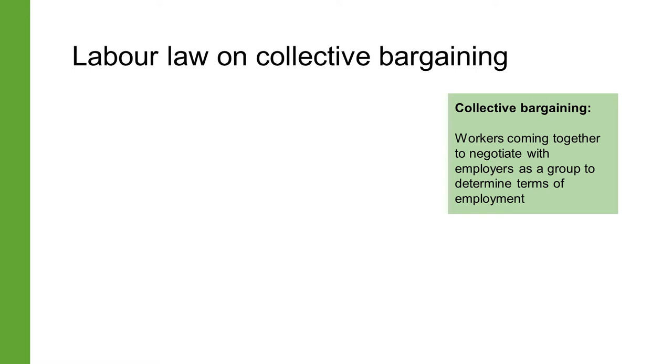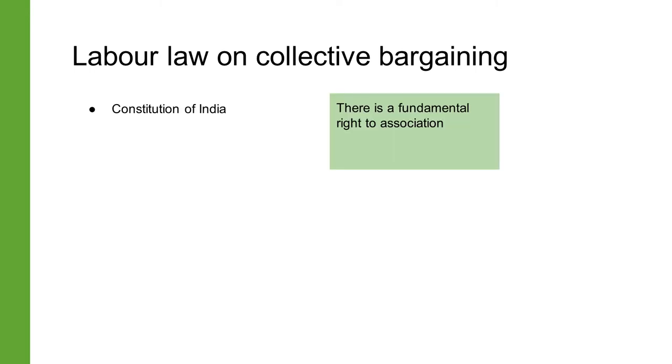Collective bargaining is the practice of workers coming together to negotiate with employers as a group. It is a key mechanism for determining the terms and conditions of employment. Under Article 19(1)(c) of the Constitution of India, all citizens have the fundamental right to form associations, unions, or cooperative societies. Workers therefore have the right to form trade unions which represent their demands and concerns—a fundamental right that can only be restricted by law on specific grounds. A most important factor is that of collective strength: individual workers can do very little on their own.